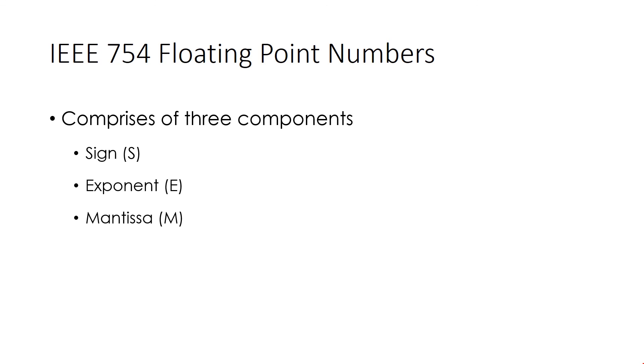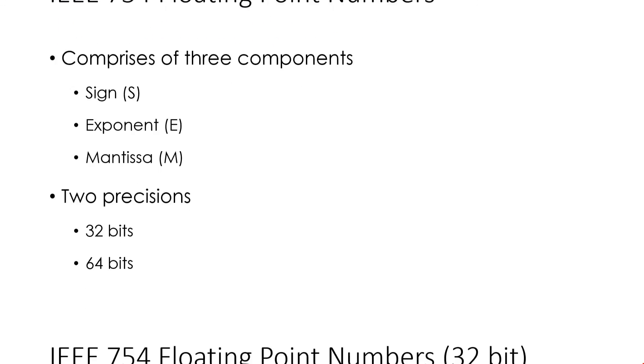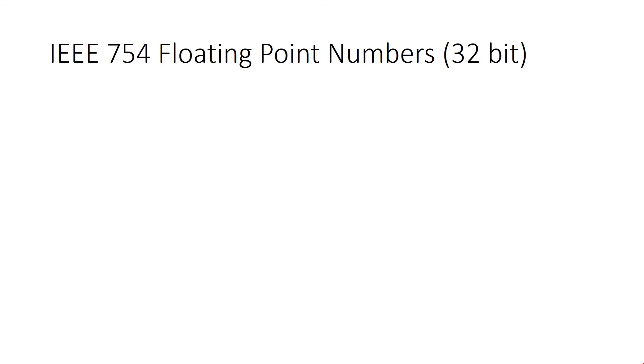There are two precision types supported: 32 bits which is often called single precision, and 64 bits which is referred as double precision. We are going to see single precision IEEE 754 floating point number conversion.